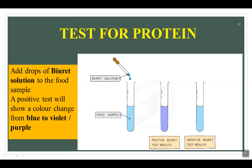For the test for protein, take 2 cm³ of food solution into a test tube and add 2 cm³ of biuret solution, which is blue in color. If the solution contains protein, the biuret solution will change its color from blue to a purple or pink color.